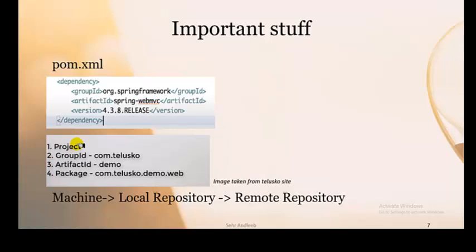Now, in a Maven-based project, it has your group ID, artifact ID, and package. Group ID and artifact ID in combination make your package name. Group ID uniquely identifies your project group and artifact ID uniquely identifies your project title. When you have a Maven-based project on your machine, Maven searches for the local repository first to check if the dependency is present. If it is present, it will use it; otherwise, it will search the remote central repository on the website. There are a lot of frameworks and plugins there and you can easily download them. This is the hierarchy: first local repository, then remote repository.